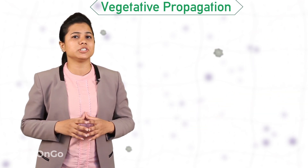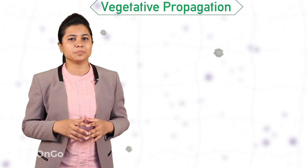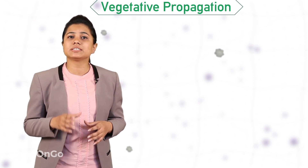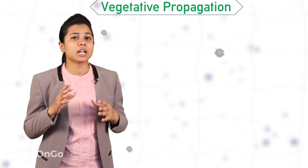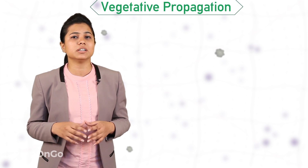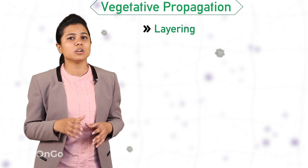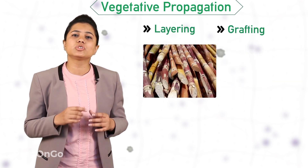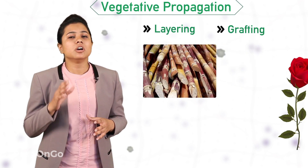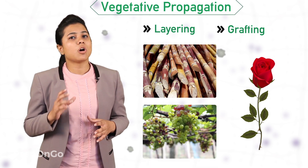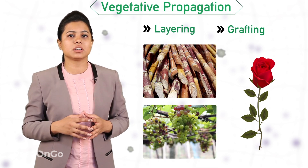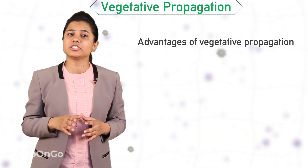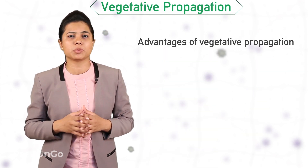All the phenomena we have seen are examples of natural vegetative propagation. These vegetative propagation techniques can also be used in artificial methods like layering or grafting to grow sugarcane, roses, or grapes.